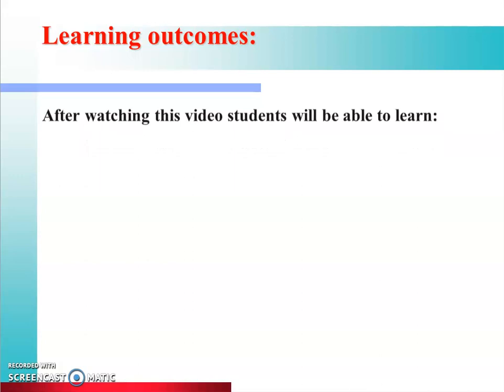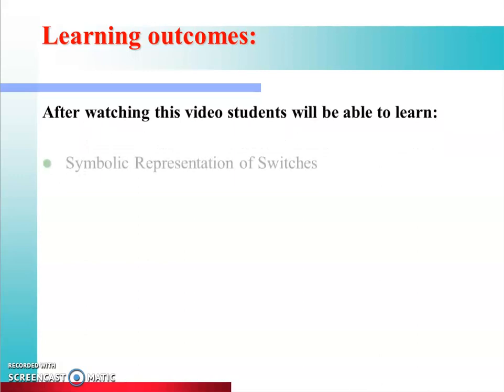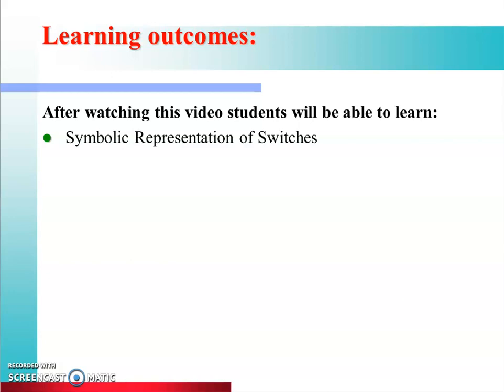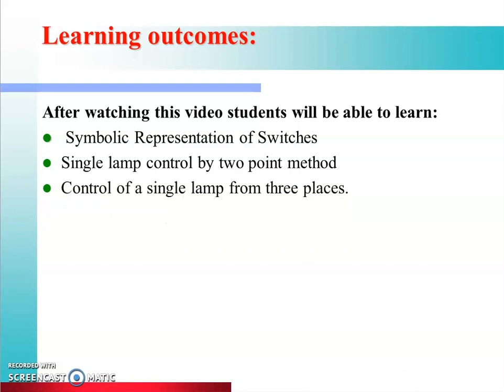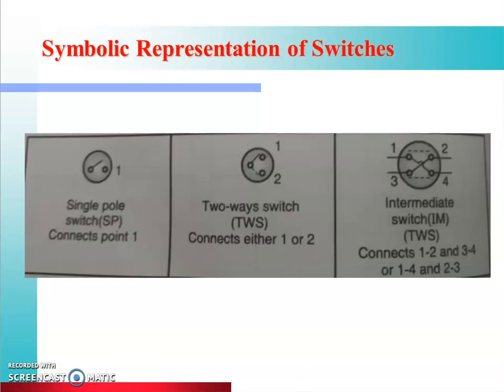Learning outcomes: after watching this video, students will be able to learn about symbolic representation of switches, single lamp controlled by two-point method, and control of a single lamp from three places. To control any lamp, the most important component is switches. We will first discuss what are the types of switches and how they are represented. The first one is single pole switch, the second is two-way switch, and the third one is intermediate switch.